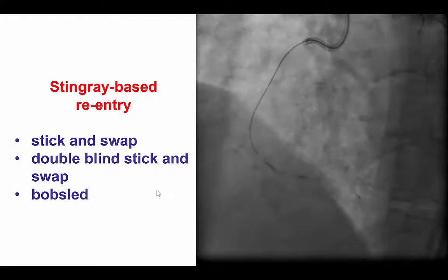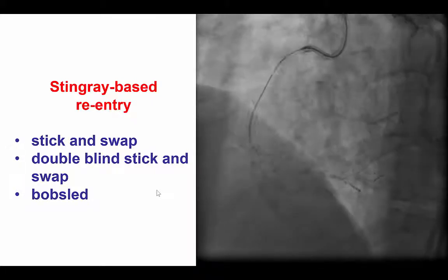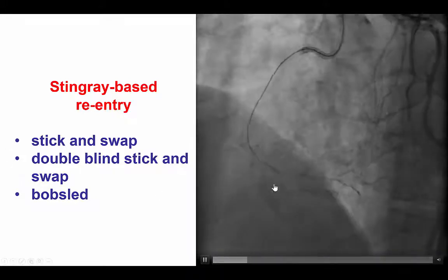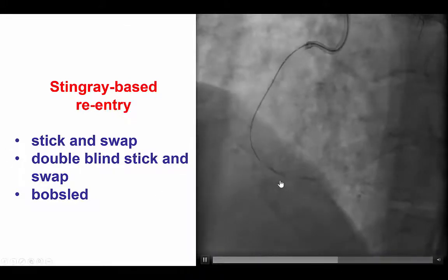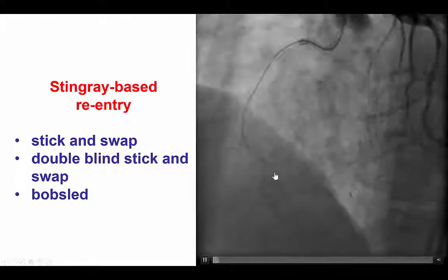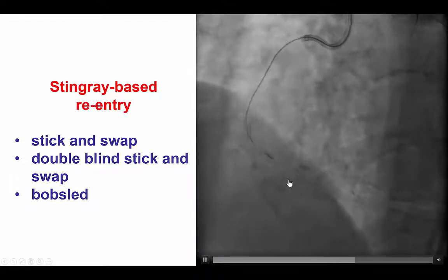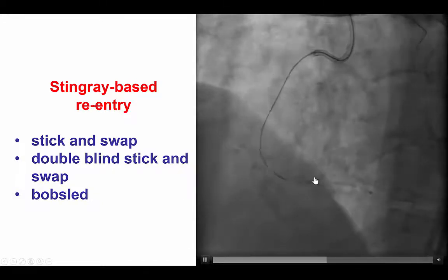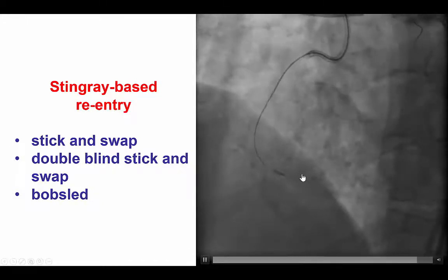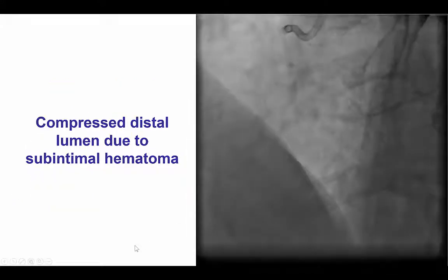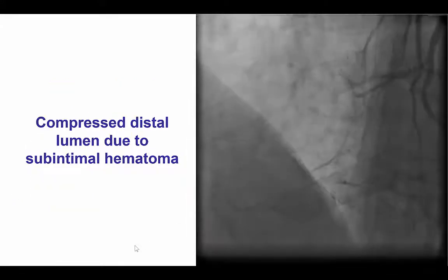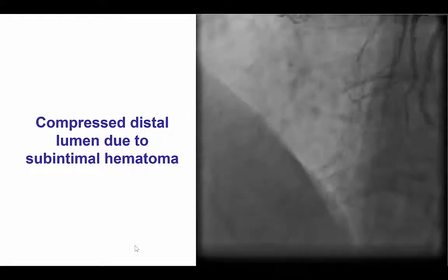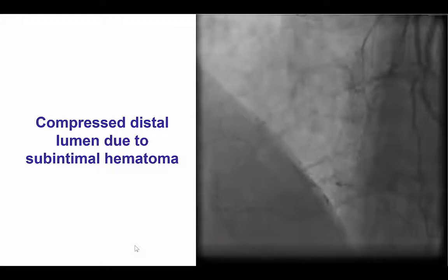We then advanced a stingray balloon to the distal right coronary in the horizontal portion and attempted re-entry using multiple techniques, including the stick-and-swap, double-blind stick-and-swap, and the bobsled, trying in different locations in the distal right coronary artery. Part of the challenge was that the distal RCA was very diffusely diseased, making it challenging to re-enter. Unfortunately, during those re-entry attempts, there was compression of the distal true lumen because of subintimal hematoma.